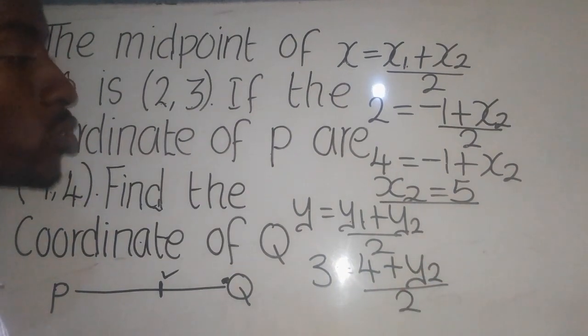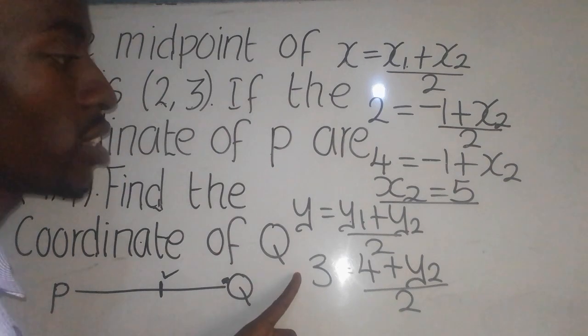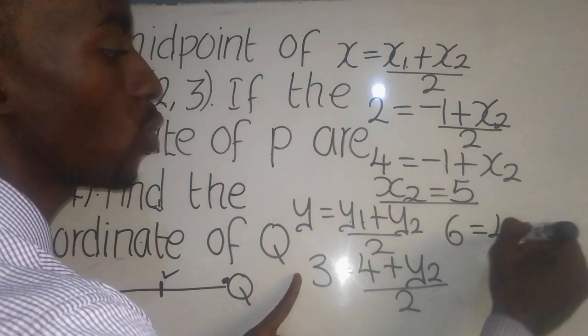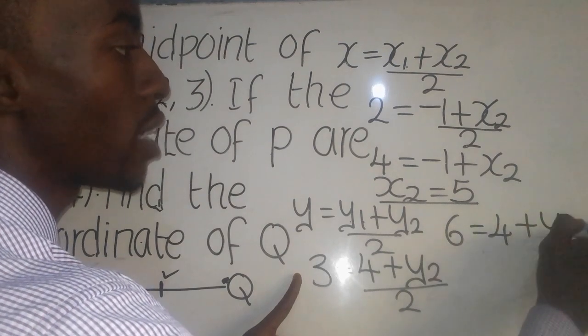Over 2. So now I'm going to say 2 times 3 is going to give me 6. So you say 6 equal to 4 plus Y2.